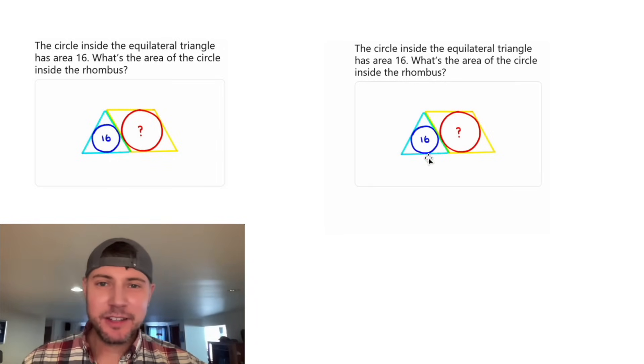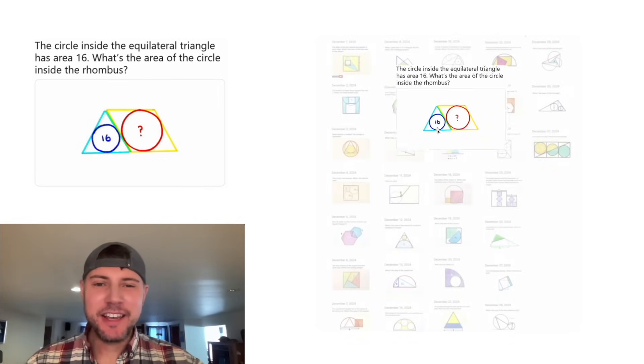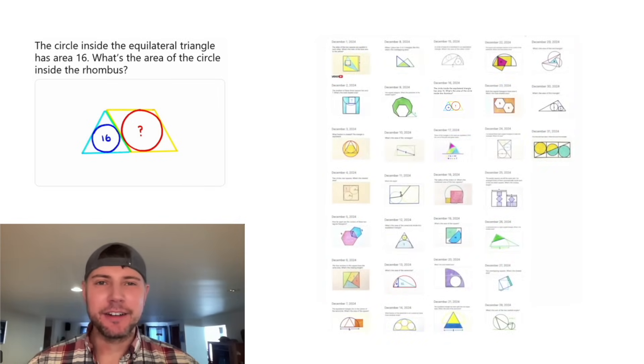Hey guys, this looks like a fun one. It says the circle inside of the equilateral triangle has an area of 16. What's the area of the circle inside of the rhombus? This is day 16 of our Advent calendar. For the month of December, we're going to solve 31 Katrina Ag puzzles in 31 days.